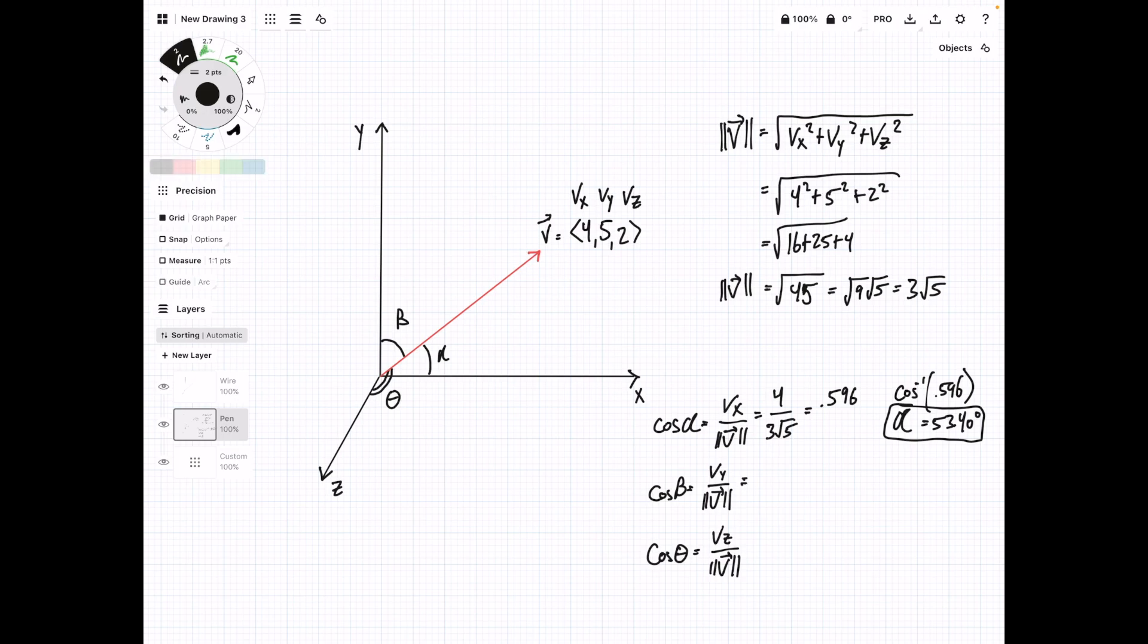Now, let's do the same thing for cosine of beta. Here, we're going to put 5 on top. Our magnitude is 3 times square root of 5. Plug this into a calculator, we get 0.745. And when we take the inverse cosine of this, we get 41.81 degrees. And that is beta. And if we're looking at our plot here, that's, again, this angle, the angle between the vector and the y-axis.